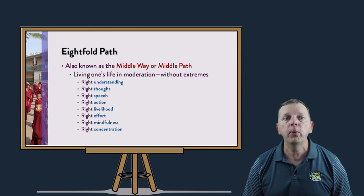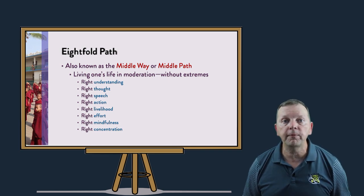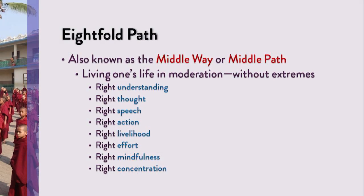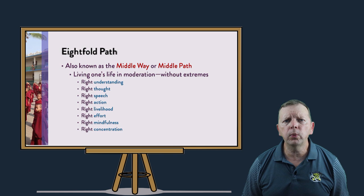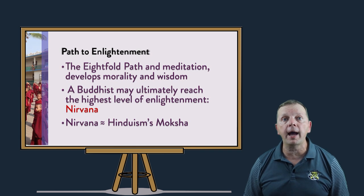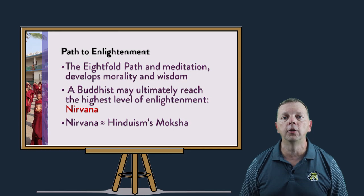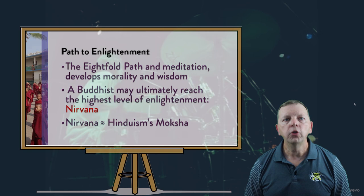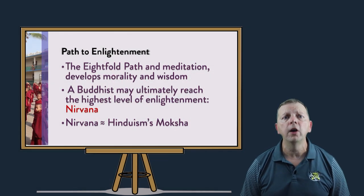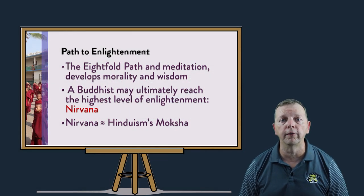The eightfold path is how you live your life with the right understanding, thought, speech, action, livelihood, effort, mindfulness, and concentration. The Buddha symbol represents the eightfold path with an eight-spoked wheel. The eightfold path is also known as the middle way, in which you should live your life in moderation or without extremes. By living your life by the eightfold path and through meditation, a Buddhist can ultimately reach the highest form of enlightenment — nirvana. No, not the rock band. Nirvana is essentially the same concept as moksha in Hinduism, which brings release from the cycle of reincarnation.